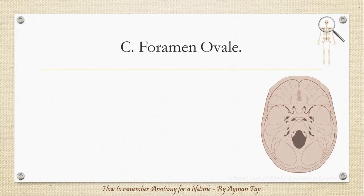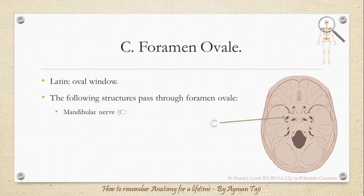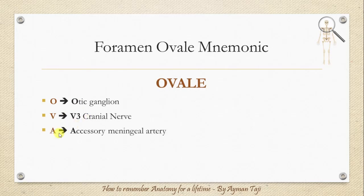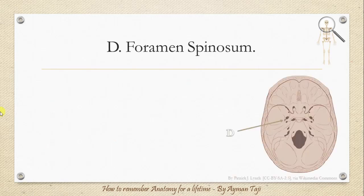Let's move on to the foramen ovale, which means in Latin 'an oval window.' Structures passing through this foramen are: the mandibular nerve or the third division of the trigeminal nerve, the accessory meningeal artery, the lesser petrosal nerve, and an emissary vein. To remember these structures, just use the word OVALE itself: O for otic ganglion, V for V3 (mandibular division), A for accessory meningeal artery, L for lesser petrosal nerve, and E for emissary vein.